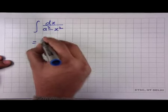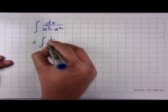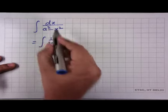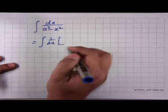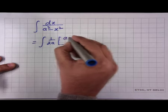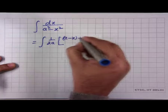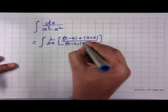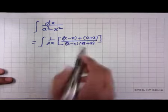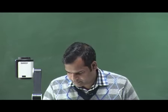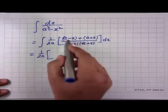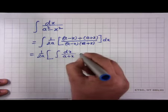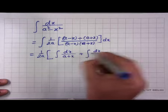For ∫dx/(a²−x²), we factor a²−x² = (a−x)(a+x). We write the numerator as the sum (a−x)+(a+x) = 2a. The difference must be taken so that no variable term remains, so we write: (a+x)+(a−x) divided by (a−x)(a+x).